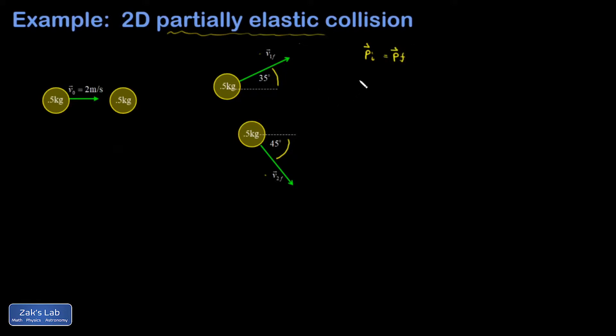But in a two-dimensional space, that means my initial x component of momentum is equal to the final x component. And it also means my initial y component is equal to the final y component. So I've got to analyze two different equations here, which looks good to me because we have exactly two unknowns. We're trying to find these final speeds.